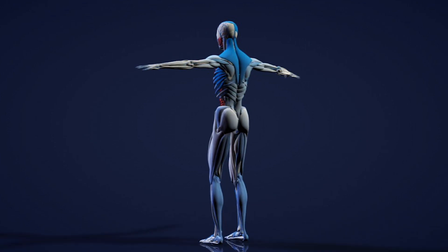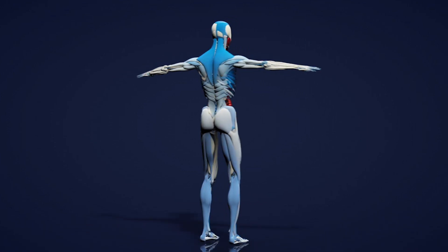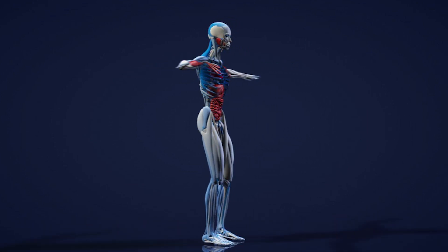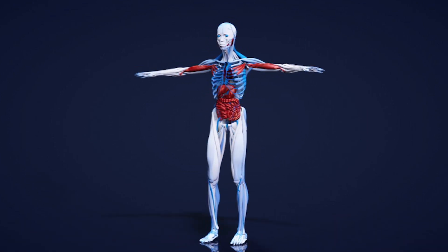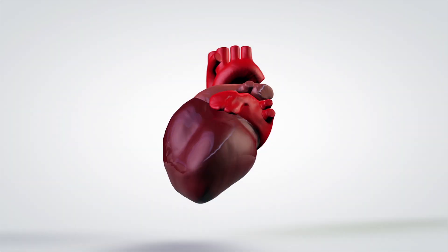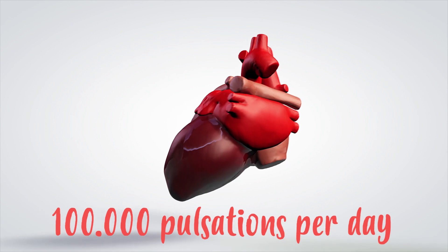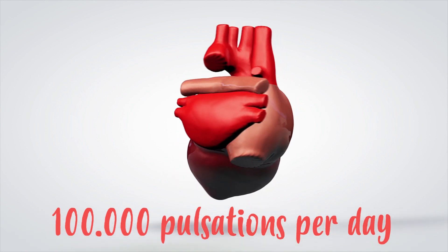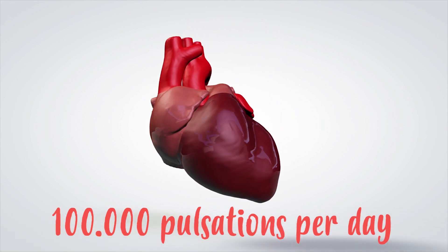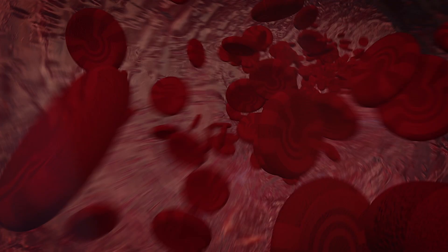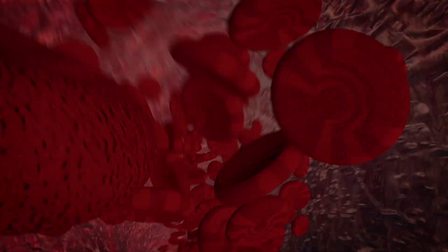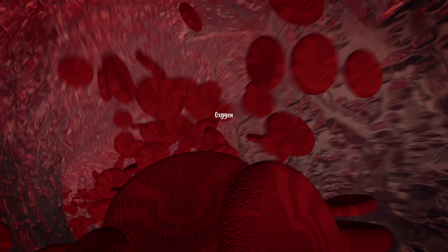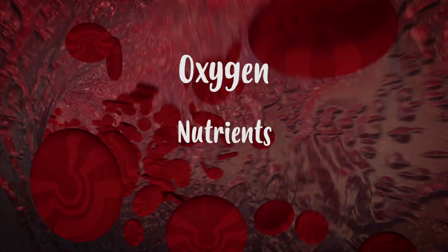The heart has the main role in making sure that the blood travels around the body. With its 100,000 pulsations per day, it ensures that blood circulates throughout our body, allowing it to distribute oxygen and nutrients into our cells.